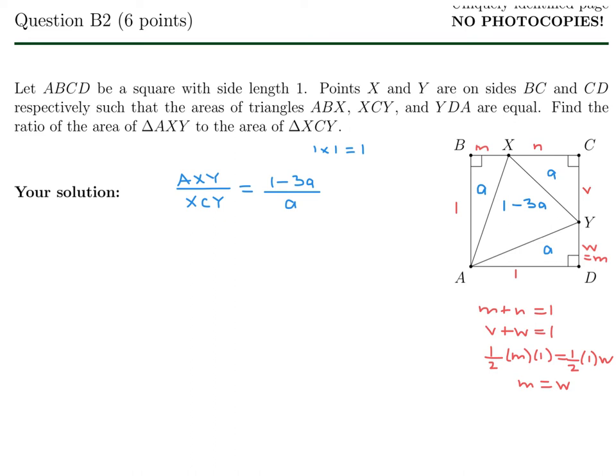And we also know that these areas are equal. So if you look at this triangle right here, we know that 1 half base times height, which is 1 half m times 1, is equal to this guy. And this is also 1. So that would be 1 half base times height, which is 1 times w. So that helps us conclude that m is equal to w. So this is the same as m. That's a pretty good finding.